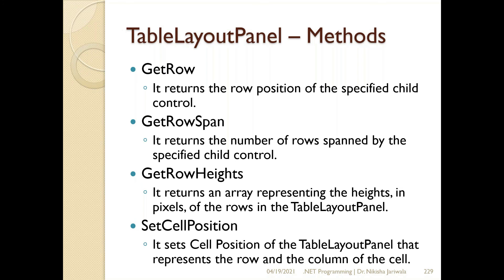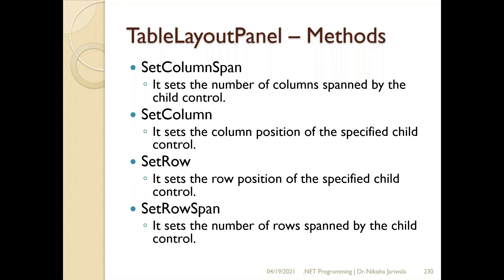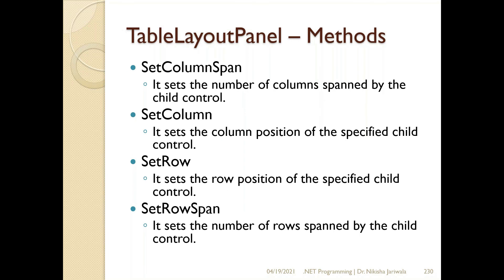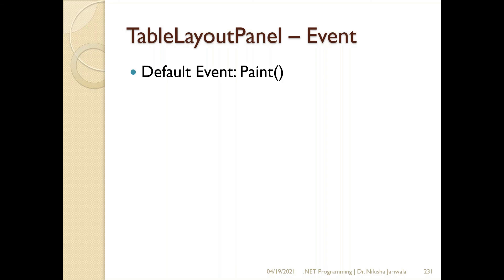If I need to set values, we can use the set methods. For example, set cell position sets a particular cell's position. Next is set column span and set row span — to set the number of columns and rows spanned. Next is set column and set row — to set particular column and row positions according to the child control. The default event of TableLayoutPanel control is also the paint event.